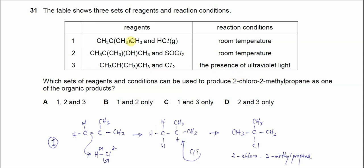Question 31. The table shows three sets of reagents and reaction conditions. Which sets of reagents and conditions can be used to produce 2-chloro-2-methylpropane as one of the organic products?